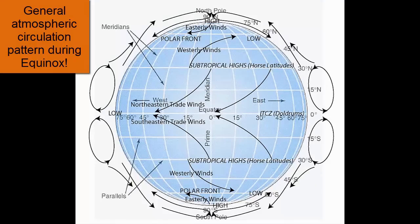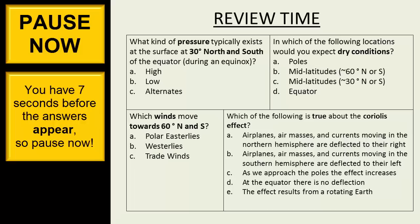So one last time let's return to our general circulation pattern. Remember, this is a baseline for the equinoxes. As the seasons change and the sun's rays hit the tropics directly, the major high and low pressure systems will migrate accordingly. Pause now.